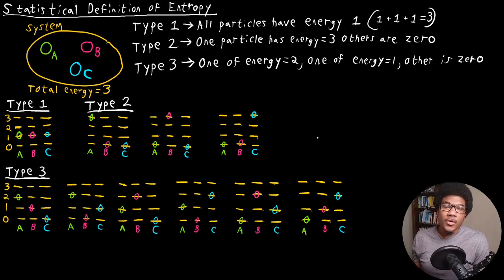In this video, we're going to discuss the statistical definition of entropy. Up until this point, we've discussed entropy as the dispersal of energy, how energy is dispersed in different processes. That's a very macro-level explanation of entropy. In order to have any sort of insight onto entropy on a micro-level, we really have to look at this statistical definition.